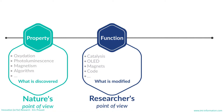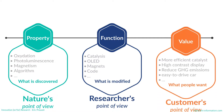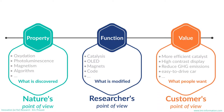From the property we have the function, and the function is the researcher's point of view. The function is what we do when we take a property and modify it. The oxidation property of a molecule by itself has no use, but if we can turn this molecule into a catalyst by combining it with the correct porous matrix, now we have a property being put in action. Finally, we have the value, which I define as the customer's point of view.